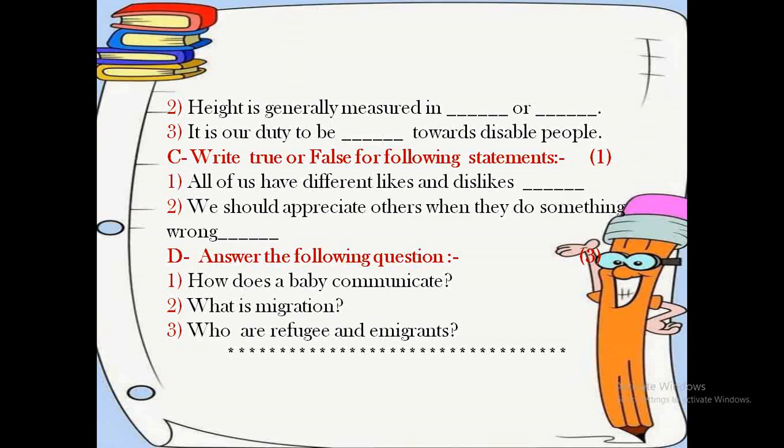Question number C: write true or false for the following statements. Children, here are two statements and you have to think over whether each statement is correct. If it is correct then write down true; if it is incorrect then write down false. Statement number 1: all of us have different likes and dislikes. Statement number 2: we should appreciate others when they do something wrong.